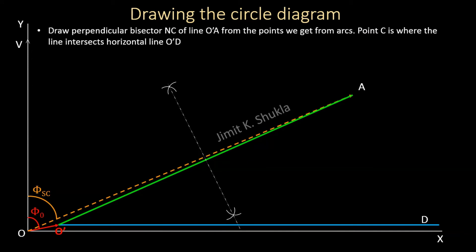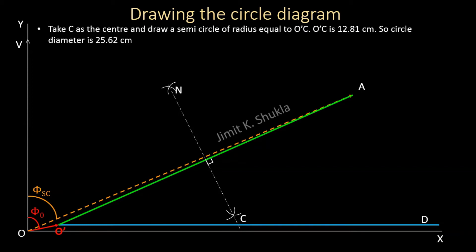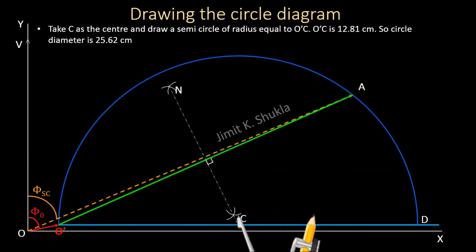We draw perpendicular bisector NC of line O'A through the arc intersection points. Where this perpendicular bisector intersects the blue line O'B, we name the point C — this becomes the center of the circle. Taking C as center, we draw a semicircle of radius equal to O'C, which is 12.81 centimeters, giving a circle diameter of 25.62 centimeters.